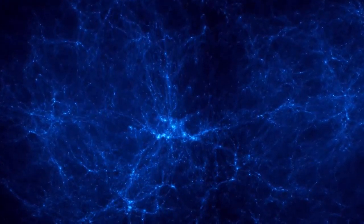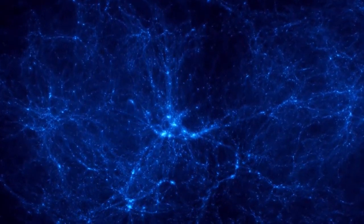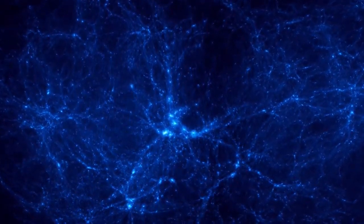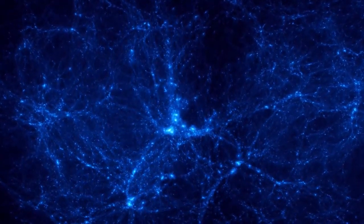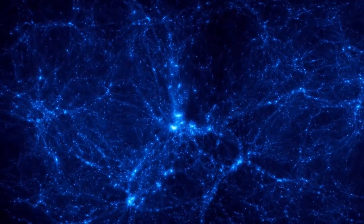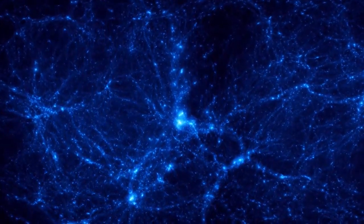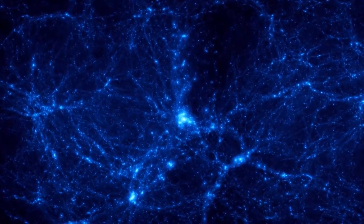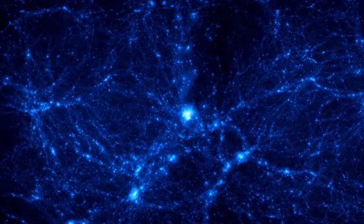This computer model shows the role dark matter has played in shaping the contours of the universe. Not long after the Big Bang, gravity began to amplify slight initial variations in the distribution of dark matter. Regions of the highest density attracted enough visible matter to form galaxy clusters and the largest superclusters.